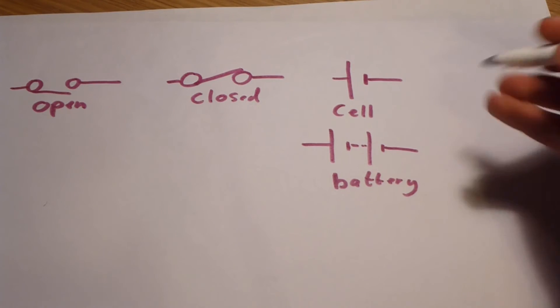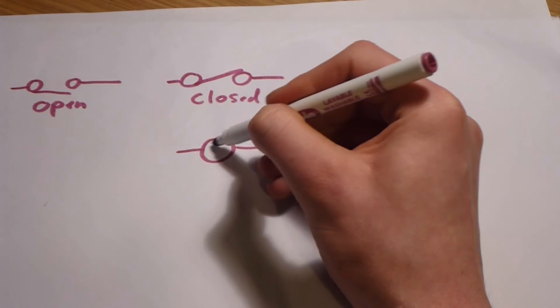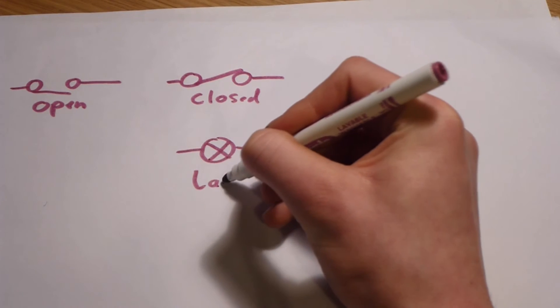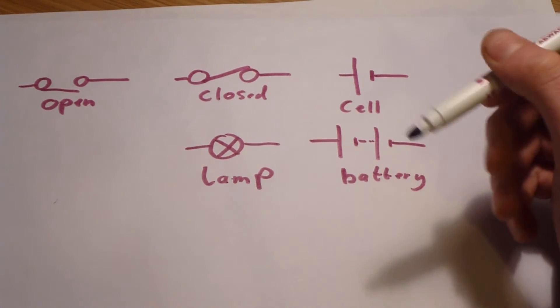Next, after the battery, there's a lamp. It's normally a filament lamp. It's drawn like that, a circle with a cross through it.